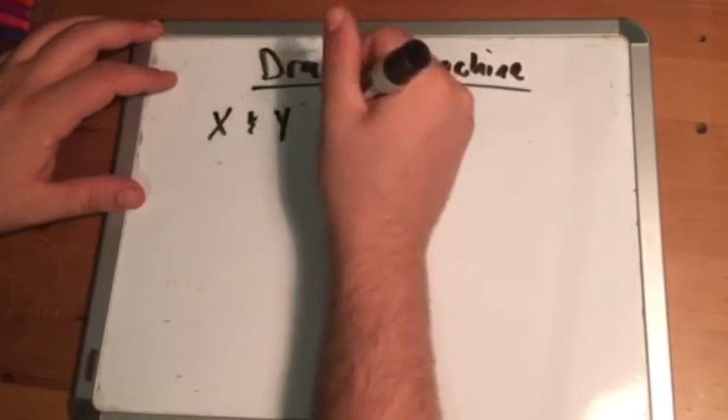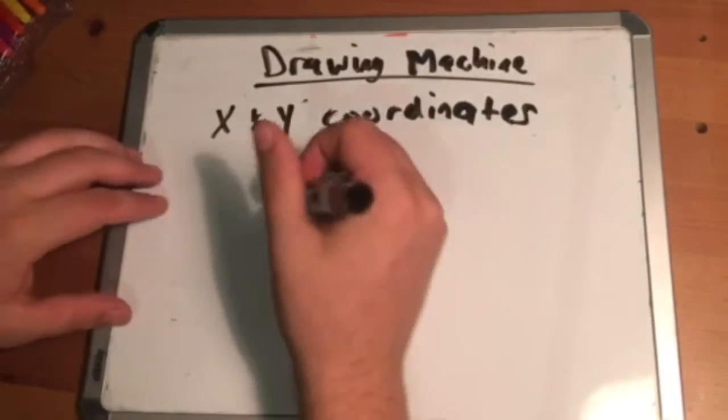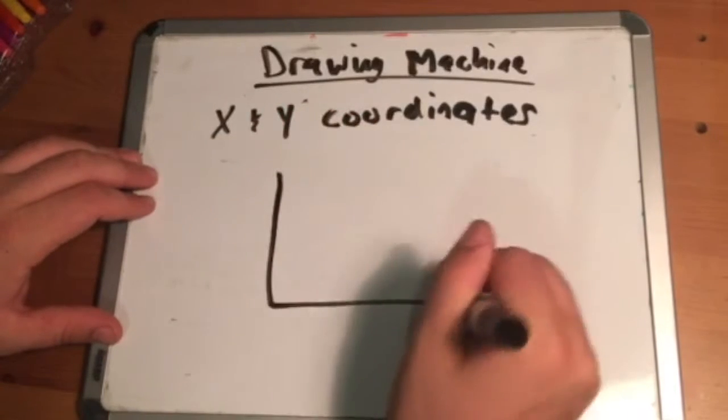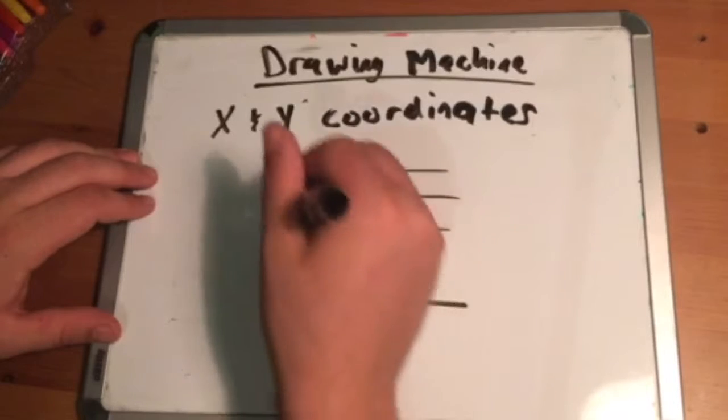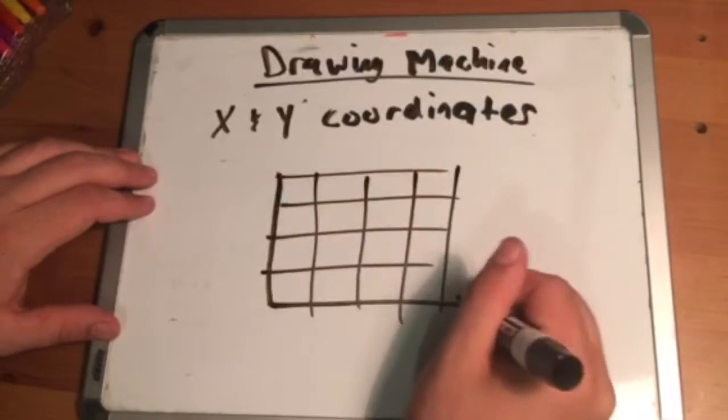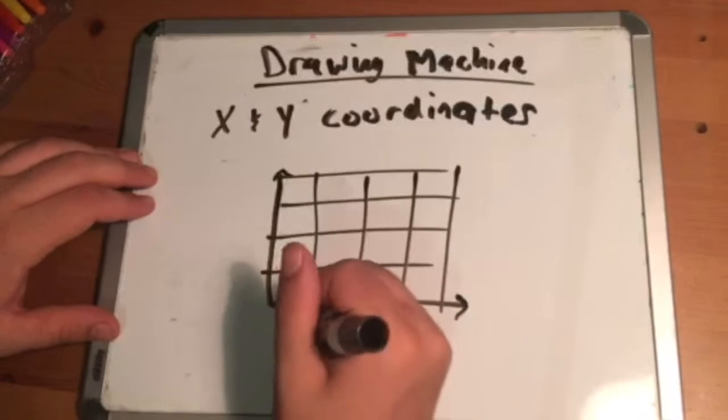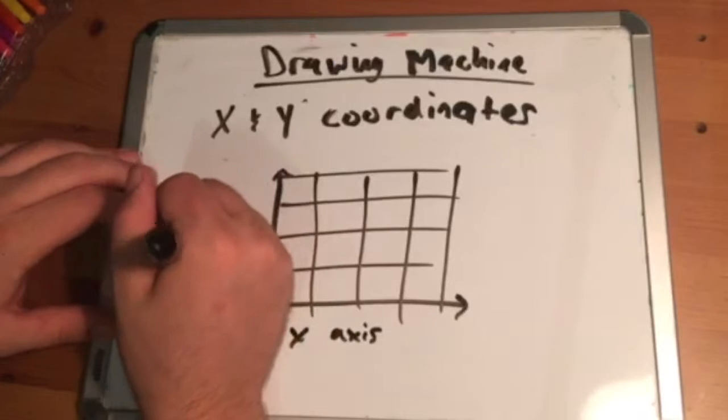One concept that's really important to this challenge is the concept of X and Y coordinates. X and Y coordinates allow us to define an object's precise location on a grid. The X coordinate tells us how far left or right an object is on a grid, and the Y coordinate tells us how far up and down an object is on a grid.